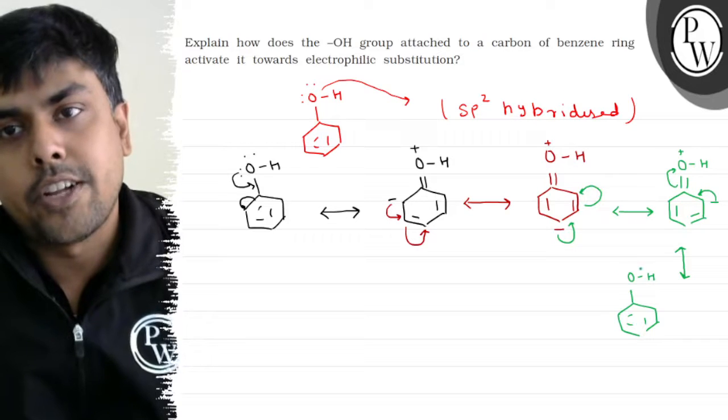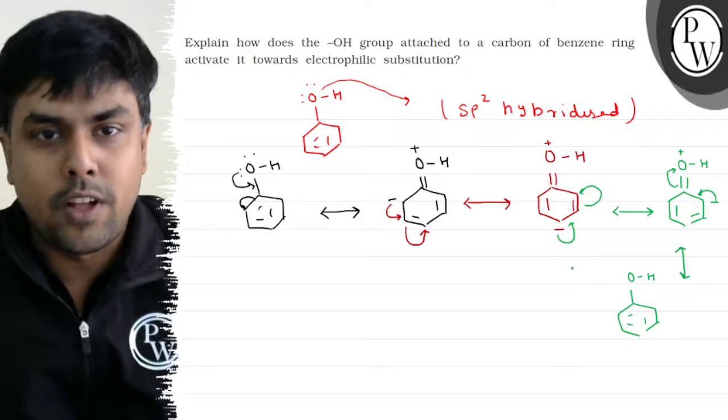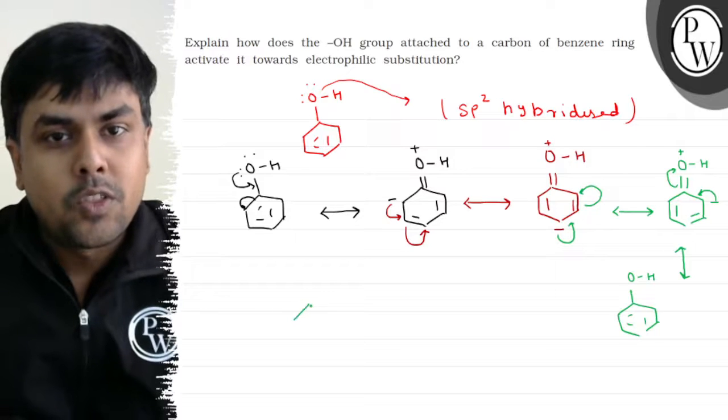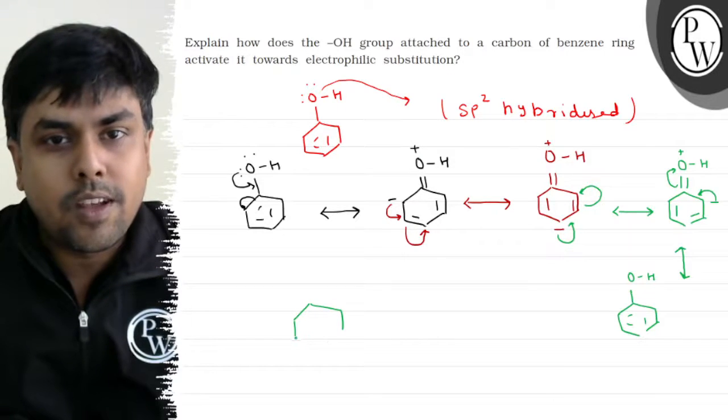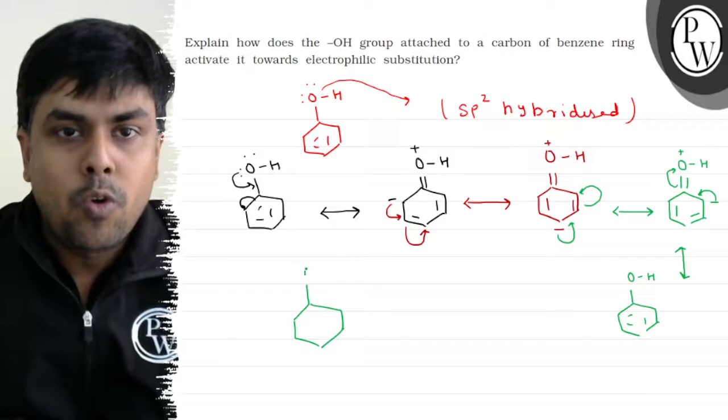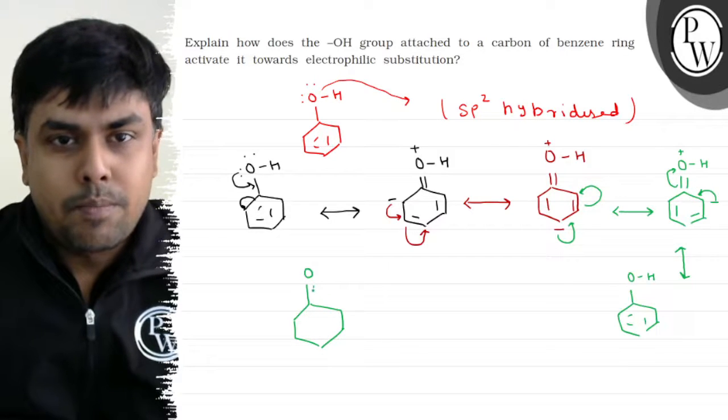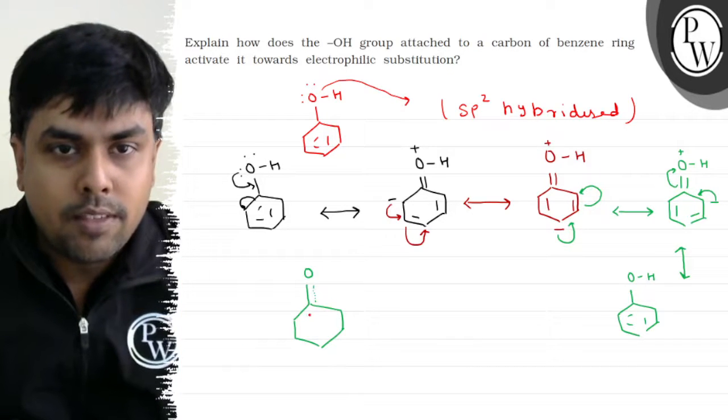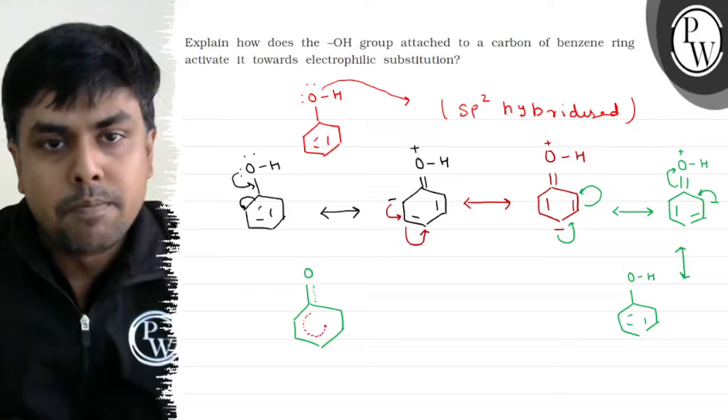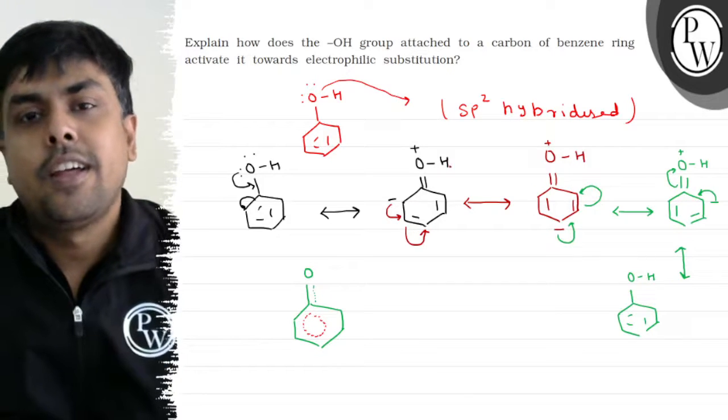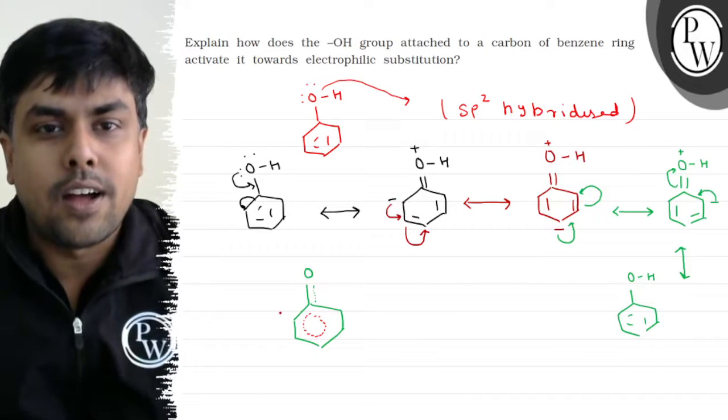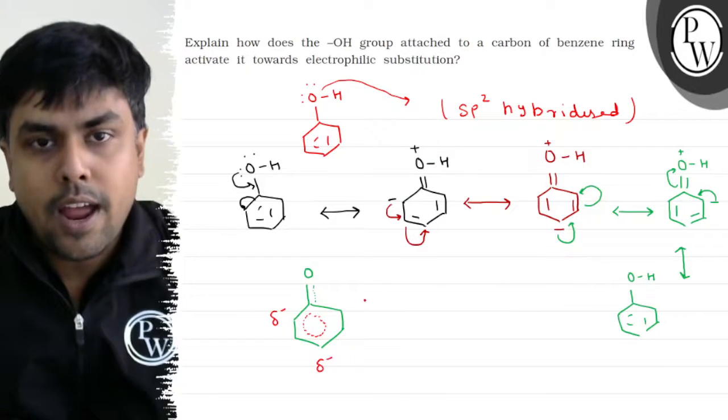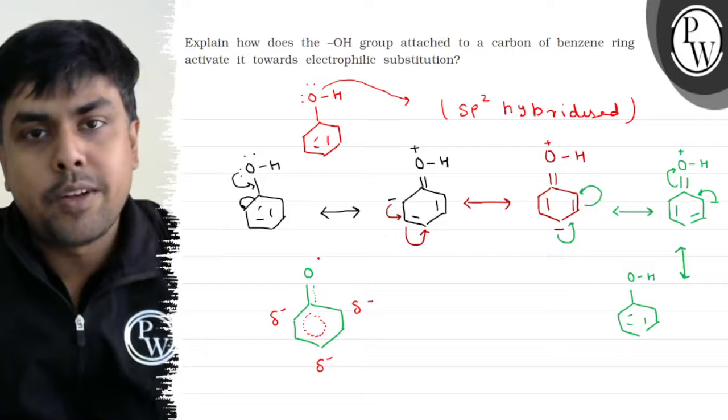These are the different resonating structures of phenol. If I talk about its resonance hybrid, the resonance hybrid will be something like this. O, partial double bond because the double bond appeared here also, and the double bond is distributed on all carbon atoms as well.